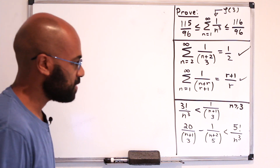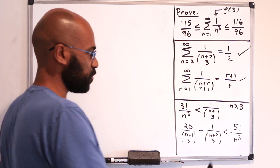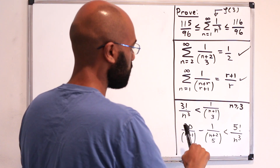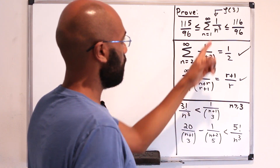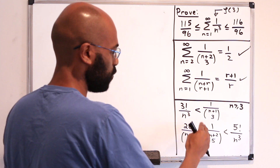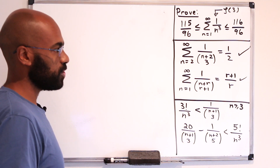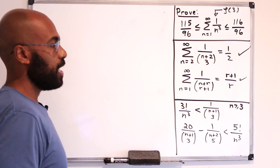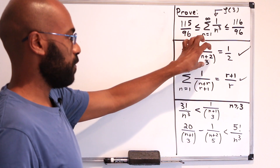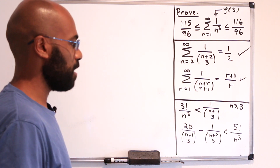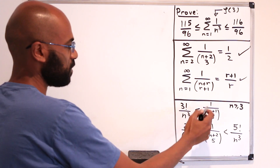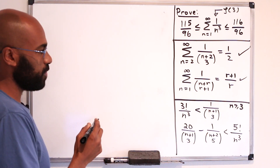The next step is to prove the inequalities relating 1 over n cubed to reciprocals of binomial coefficients, and then use those together with this sum to get our estimates. Let's start with the first inequality.